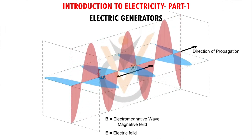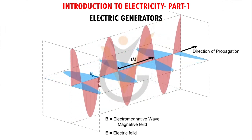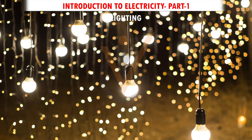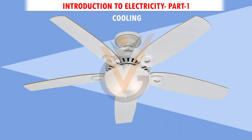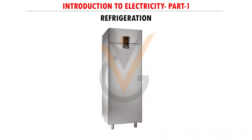Electricity is an essential part of modern life. People use electricity for lighting, heating, cooling, and refrigeration, and for operating appliances like lights, fans, fridges, computers, electronics, machinery, and public transportation systems.